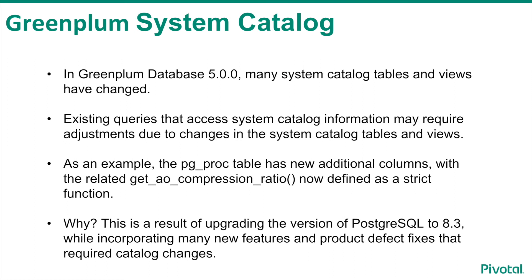Changes have been made to the system catalog in Greenplum 5. Many of the system tables and views have been updated in this release. Existing administrator queries that access system catalog information may require adjustments due to these changes in the system catalog tables and views. As an example, the pg_proc table has new additional columns with the related getAO compression ratio now defined as a strict function. This is a result of upgrading to Postgres 8.3 while incorporating many new features and product defect fixes that required catalog changes.